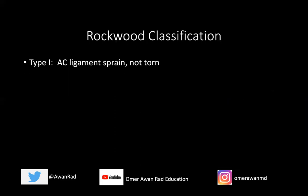A type one injury you will never diagnose on radiography because the x-ray is normal — the AC ligament is sprained but not torn. On MRI, you may see thickening and heterogeneous signal within the AC ligament suggesting a type one injury, but you would never call it on x-ray.